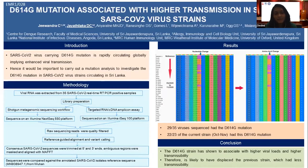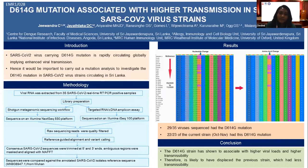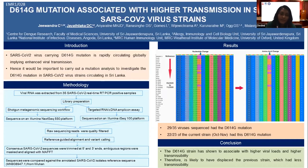As all of you know, since March 2020, Sri Lanka had several confined COVID-19 clusters coming up in several parts of the country, and since October we are having this current epidemic outbreak. SARS-CoV-2 virus carrying the D614G mutation is rapidly circulating globally. Therefore, we carried out a mutation analysis to investigate the D614G mutation in SARS-CoV-2 virus circulating in Sri Lanka.